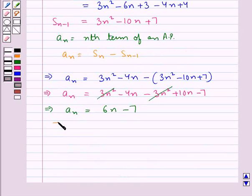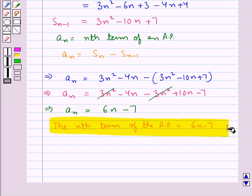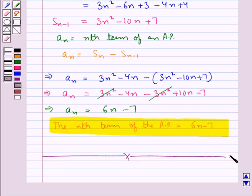Thus we get the nth term of the AP is given by 6n - 7. This is our final answer. This completes the session. Hope you have understood the solution of this question.